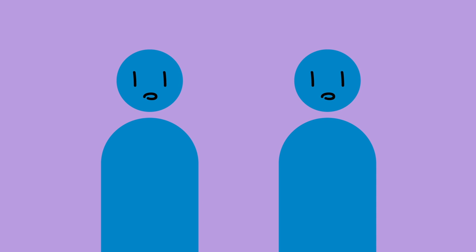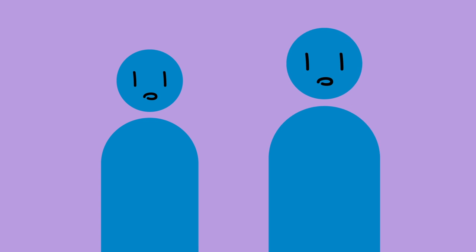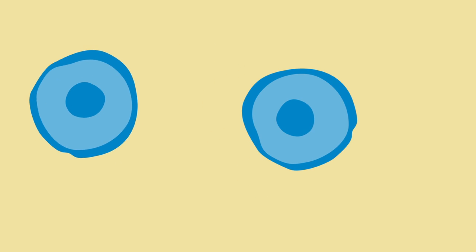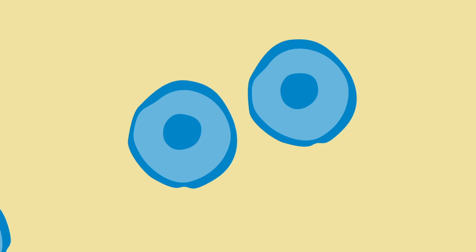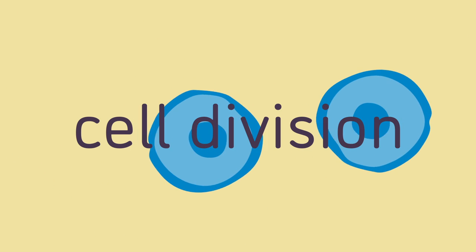It all starts with our cells. Our bodies are essentially cell factories. The cells in our body normally grow and multiply to form new cells as our body needs them. Cells can also become damaged and die, and our body replaces those with new cells through a process called cell division.